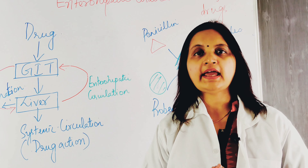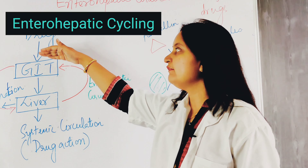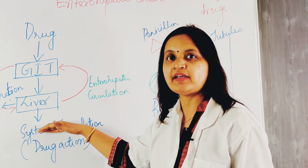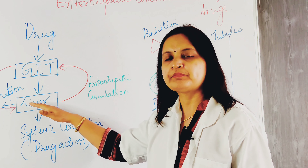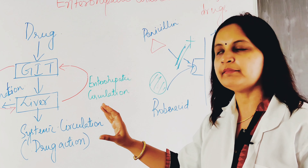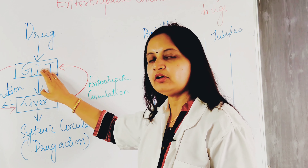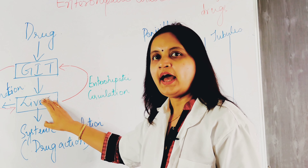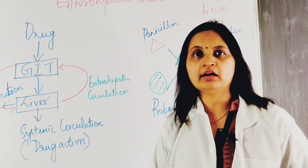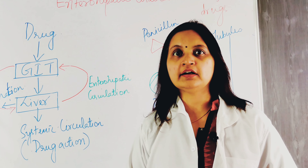The next factor is enterohepatic cycling. The drug is taken orally and reaches the GI tract where it is absorbed, passes through the liver, and reaches the systemic circulation where it is available for action on the target site. Later the drug is eliminated by metabolism. However, certain drugs undergo enterohepatic cycling where the drug is secreted into the bile from the liver, re-enters the intestine where it is re-absorbed, comes back to the liver and is recirculated. Due to this repeated cycling, the elimination time and action of the drug is prolonged, so such drugs are effective in lower doses.